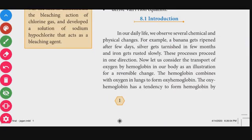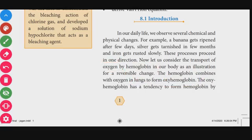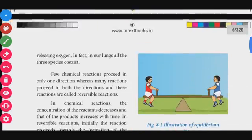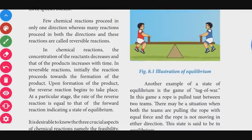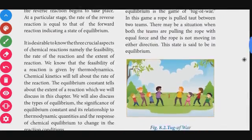In the equilibrium process, we begin with the introduction of the hemoglobin-oxygen binding process. Hemoglobin binds oxygen in the lungs to form oxyhemoglobin. Similarly, oxygen will dissociate. This is a well-known process related to equilibrium.